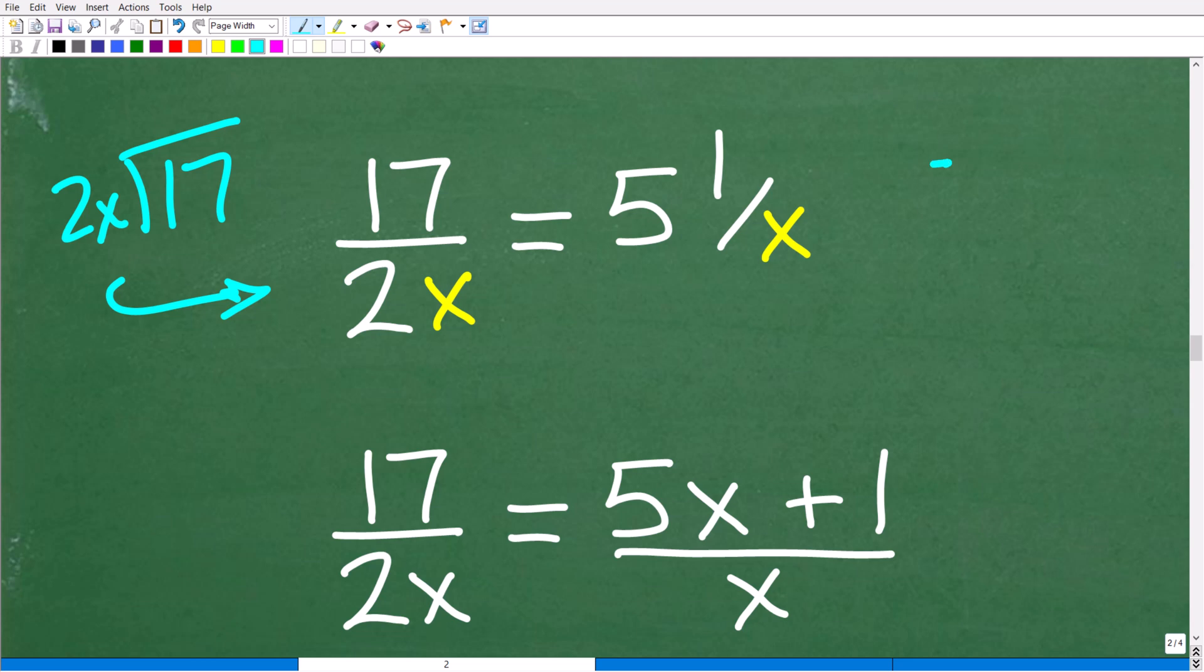Now, remember, when you have a mixed number fraction like 5 and 1 third, I could turn it into an improper fraction by taking this 3 and multiplying it by 5. So that's 15 plus 1. So this would be 15 plus 1 over 3. Now, I'm going to do the same thing, but we're going to be using this x here. So x times 5 is 5x plus 1 over x. Okay, so I'm doing the same thing here. I'm converting a mixed number fraction into an improper fraction. So x times 5x plus 1 over x. Same thing as if I was doing 5 and 1 third. So that would be 15 plus 1. Of course, that would be 16 thirds.